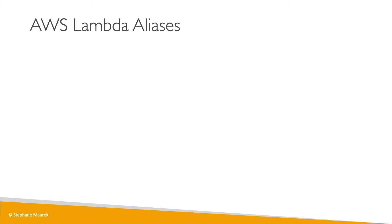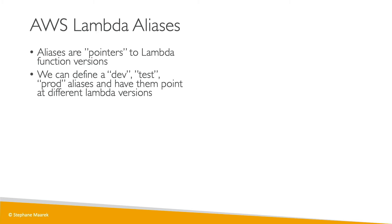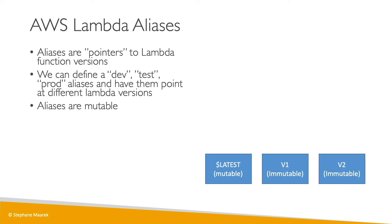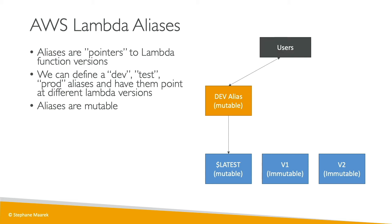But if we want to give end users a stable endpoint, we can use Lambda aliases. Aliases are pointers that point to your Lambda function versions. We can define dev, test, and prod aliases, for example, and have them point to different Lambda versions. Aliases are mutable, which is why we want to use them. We can create a dev alias pointing to the $LATEST version so we can edit code and quickly see how it's going, and our users will interact with the dev alias which will in turn call the latest version of our function.